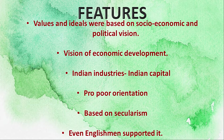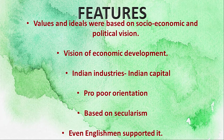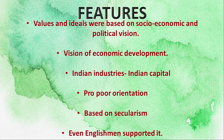Regarding the economic vision of our nationalist leaders: they envisioned the development of India through indigenous industrialization and capital funded through Indians. There was also a pro-poor orientation in our national struggle from the very beginning, which strengthened with the advent of Gandhiji and gave rise to a socialist outlook. For example, agrarian reforms were mainly aimed at reducing the hardships faced by the peasantry — the poor class of those times. However, socialism was never the official goal of the Indian National Congress, as it was a movement accommodating people of various political ideologies.